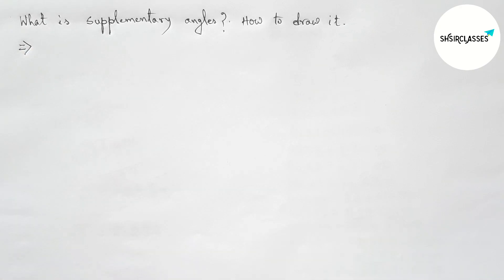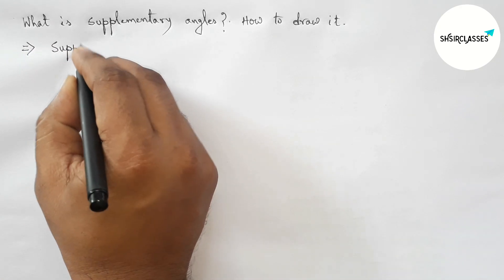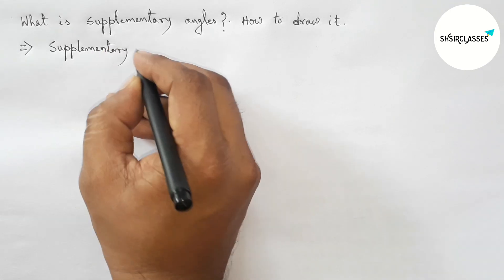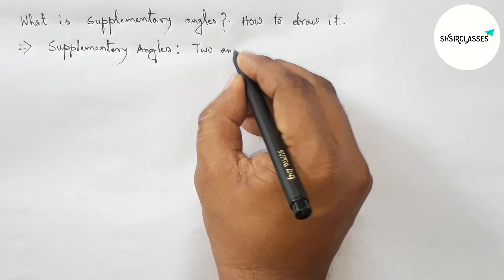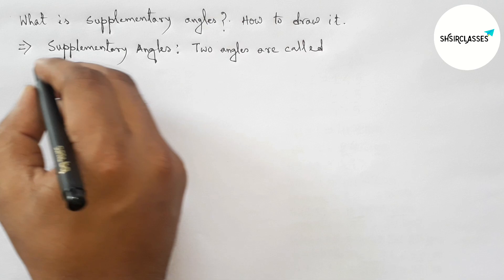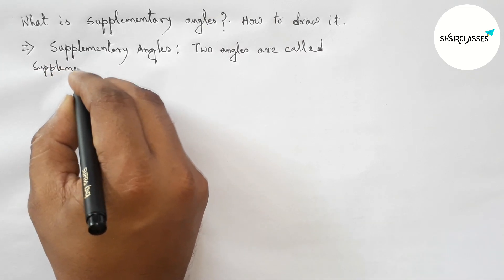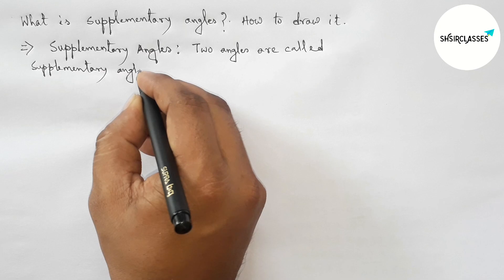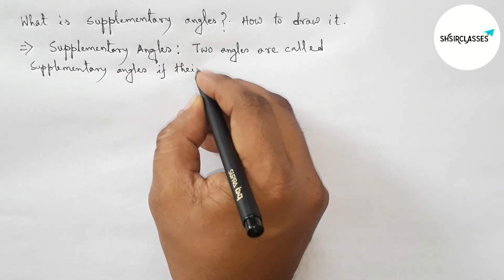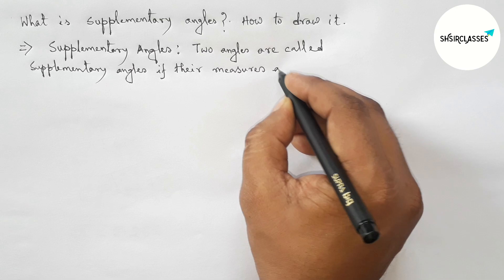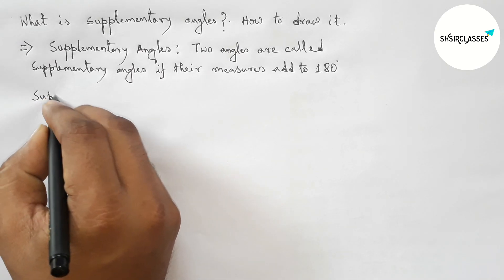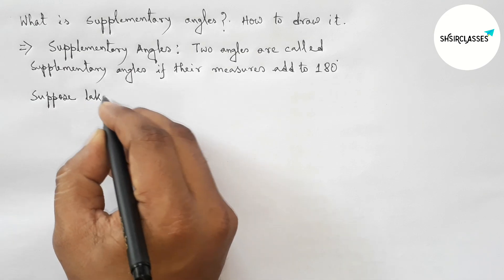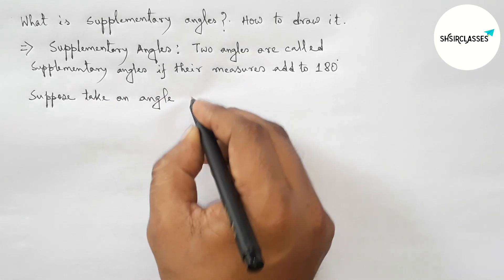First, let us define supplementary angles. Two angles are called supplementary angles if their measures add up to 180 degrees. So the sum of two angles equals 180 degrees — that is the definition.